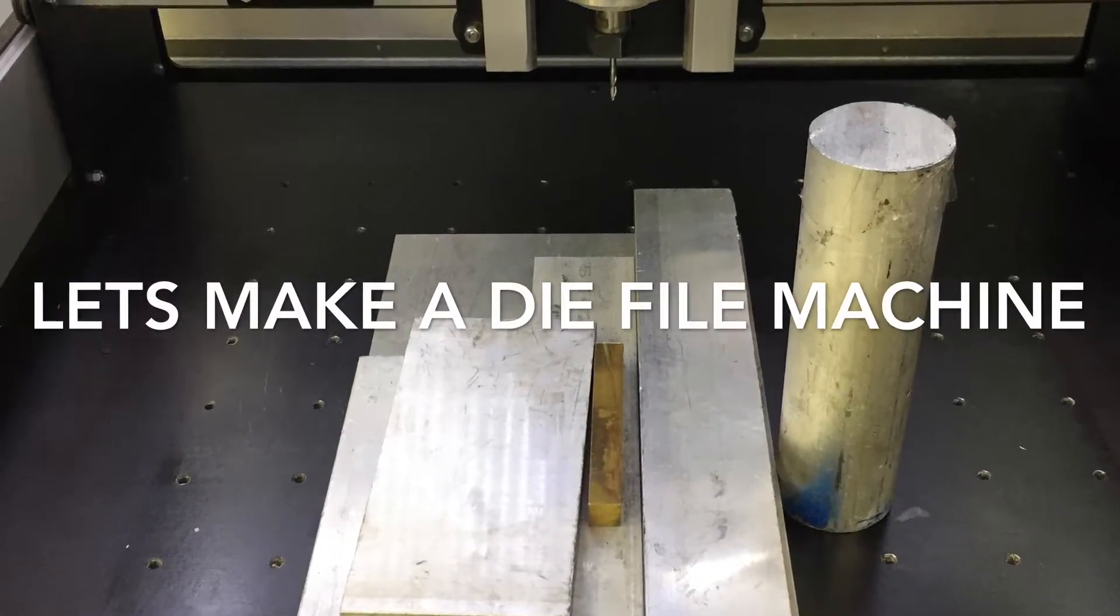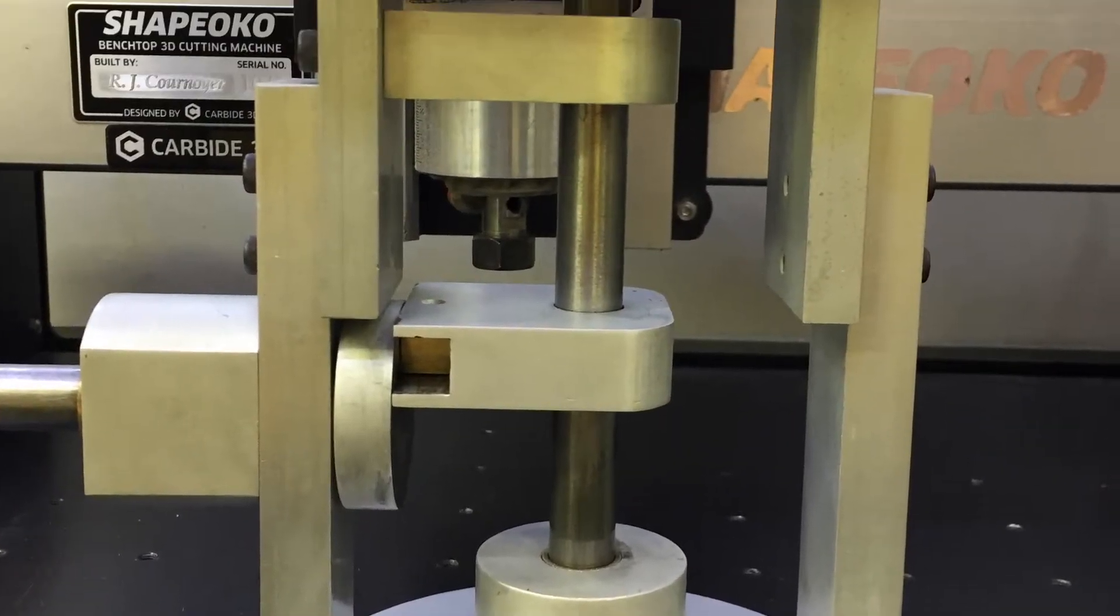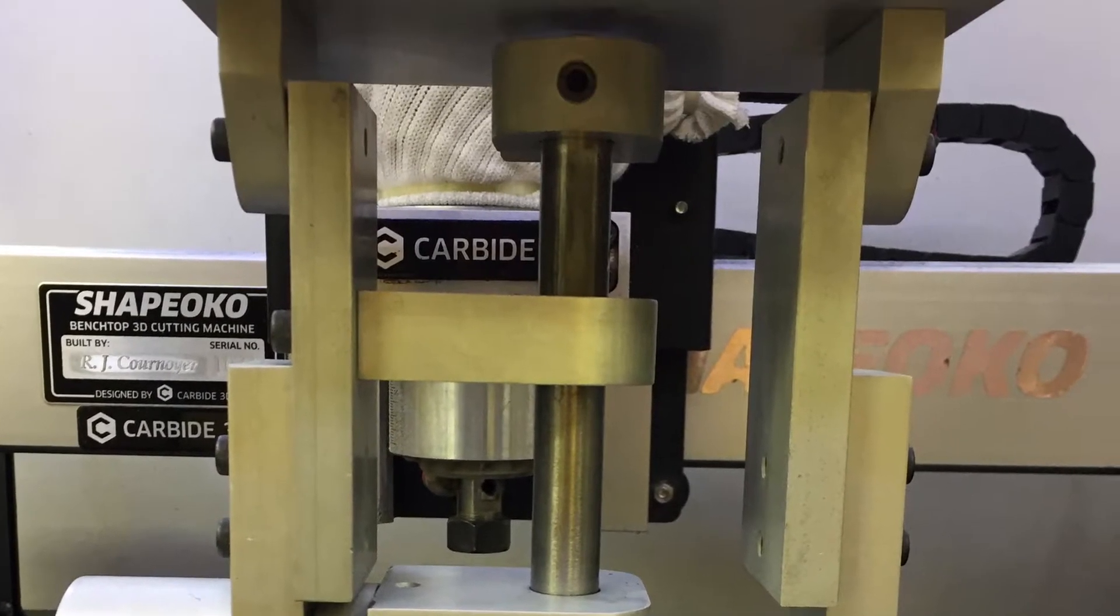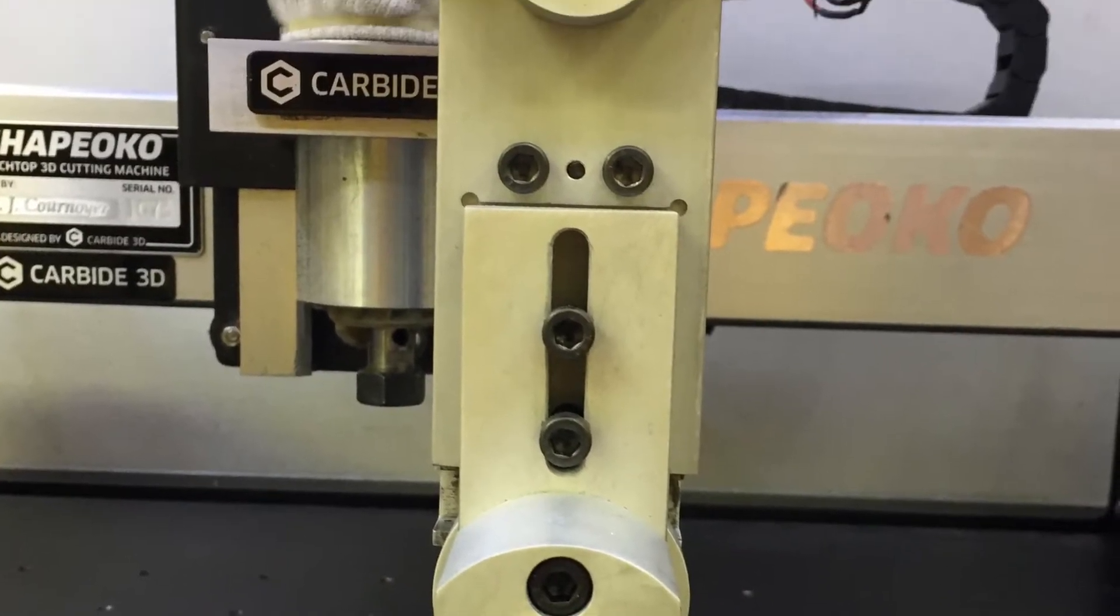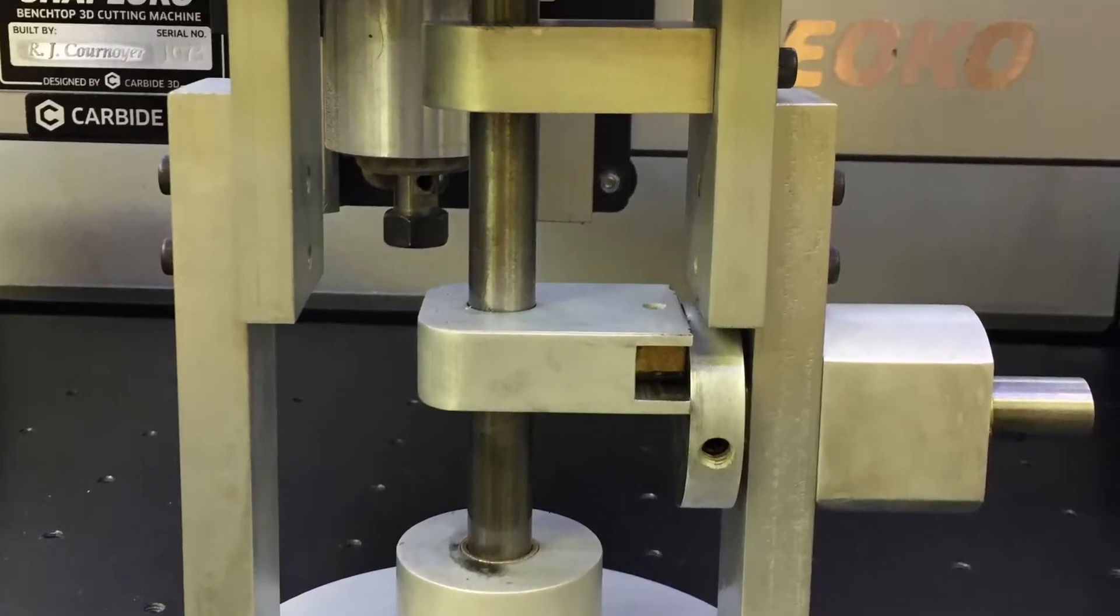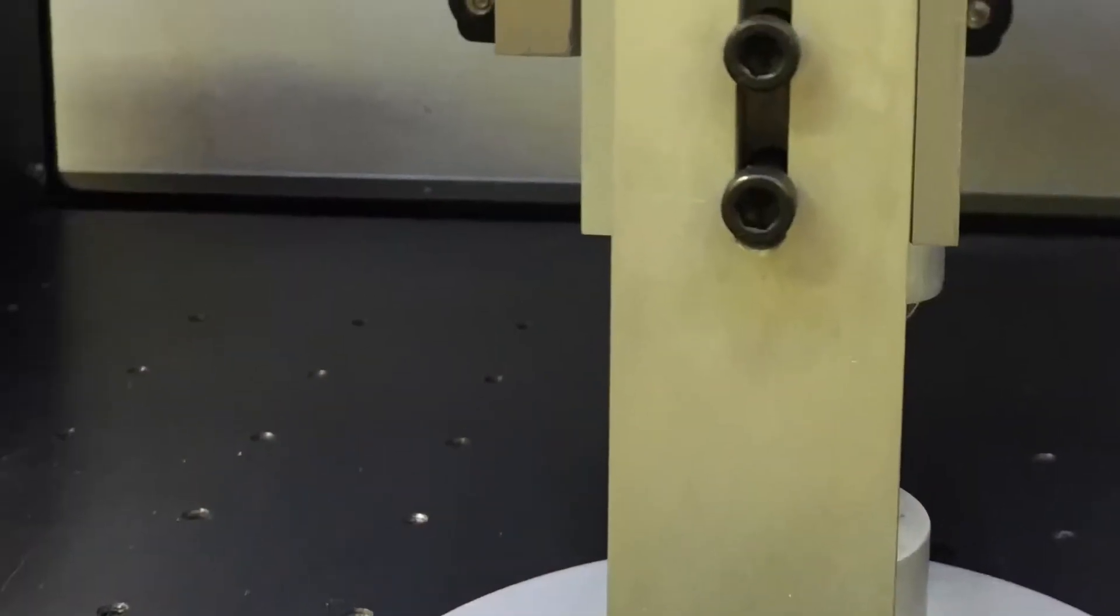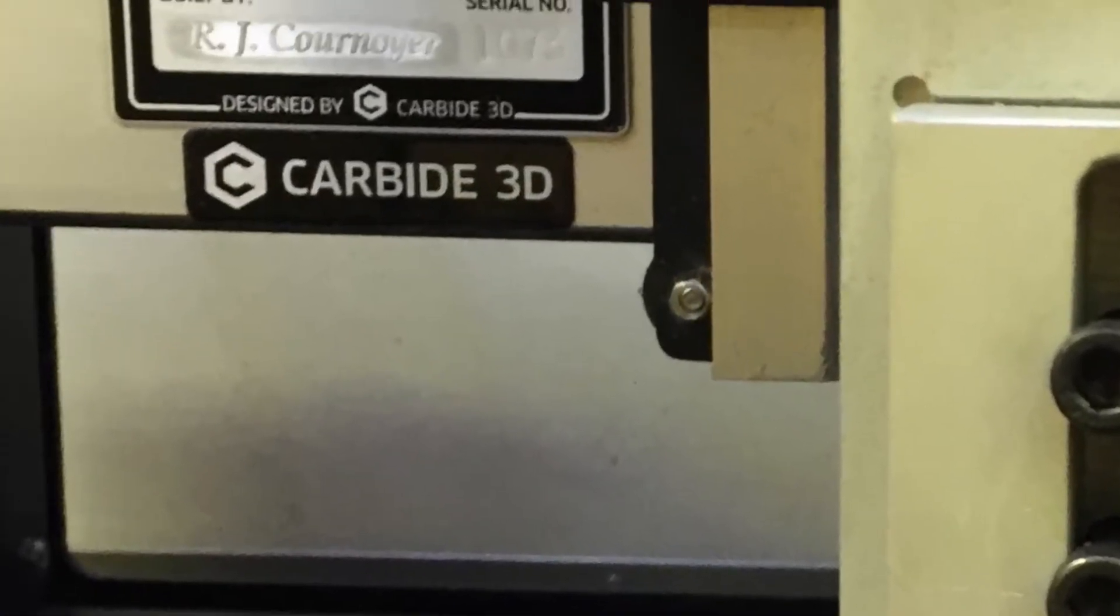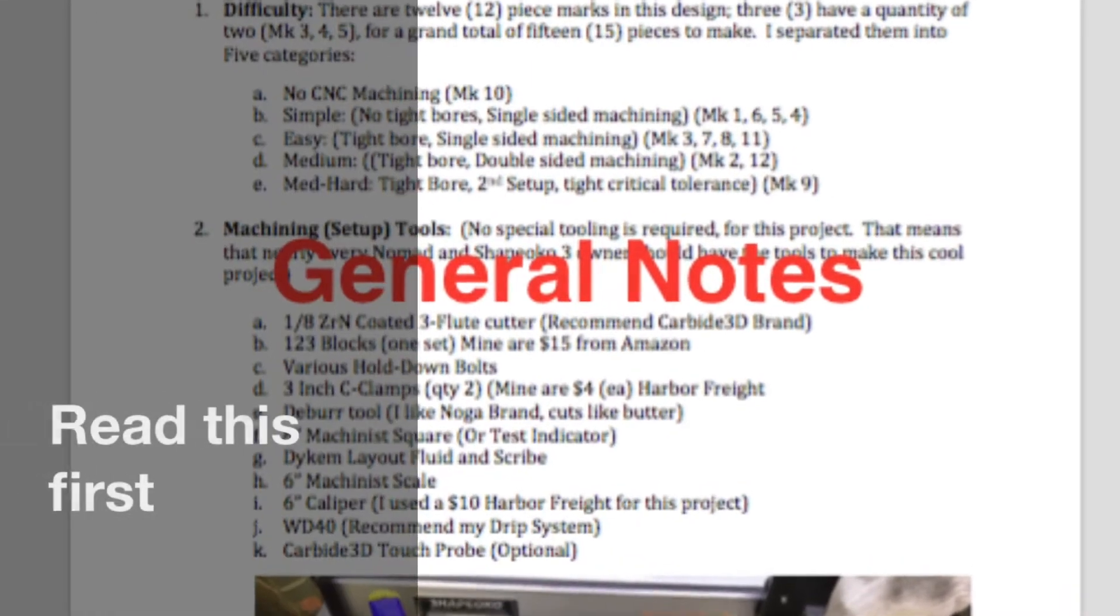Let's make a die filer machine. The purpose of this video is to assist you with the files that I have left at the community forum over at the Carbide 3D website. You should have downloaded the files, printed out the documents, and read through everything. You should have a good understanding of the general notes and tools required for this process.